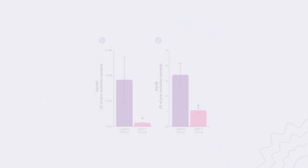While no technique is perfect so far at lipoprotein removal, we have found that QEV columns from the 70nm series are as close as it gets here, with in-house studies showing impressive removal of both APO-A1 and APO-B.